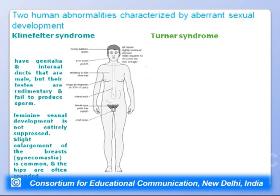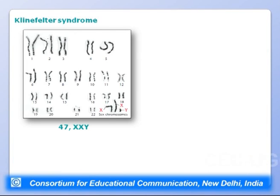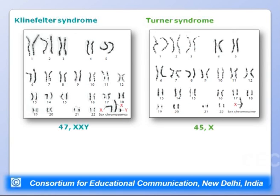Klinefelter syndrome has a karyotype of 47 chromosomes: 22 pairs of autosomes plus XXY. Turner syndrome has 45 chromosomes: 22 pairs of autosomes plus a single X, with no other sex chromosome. These karyotypes result from non-disjunction — failure of X chromosomes to segregate properly during meiosis — producing gametes with two X chromosomes or no X chromosome.